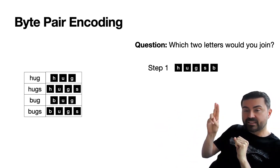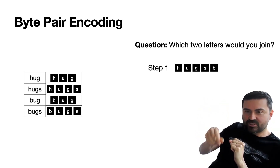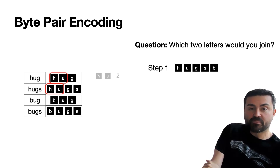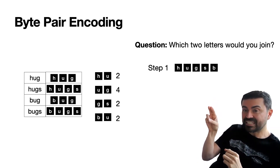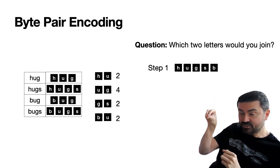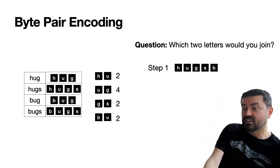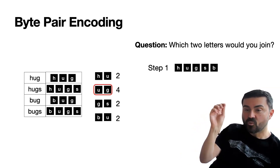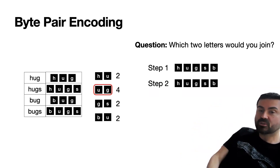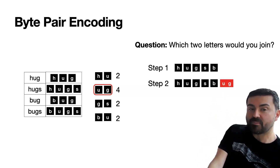What we're going to do is find the most common pair of letters — or existing tokens — appearing together, join them, and put a new token there. H-U appears twice, U-G appears four times, G-S appears twice, and B-U appears twice. So if we take U and G and join them into one token, every time we run into U-G we only press one keystroke instead of two, saving a lot of work. That's going to be our first step: join U-G into one token. Now I have the tokens H, U, G, S, B, and UG.